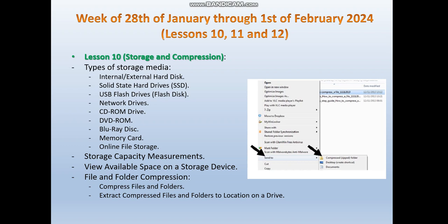In lesson 10 we will cover an important topic about storage and compression under Windows 10. We are going to talk about the types of storage media: internal and external hard disks, solid state drives abbreviated as SSD, and the main differences between a traditional hard drive and an SSD. We will also cover USB flash drives, network drives, CD-ROM, DVD-ROM, Blu-ray discs, memory cards, and online file storage or cloud storage.